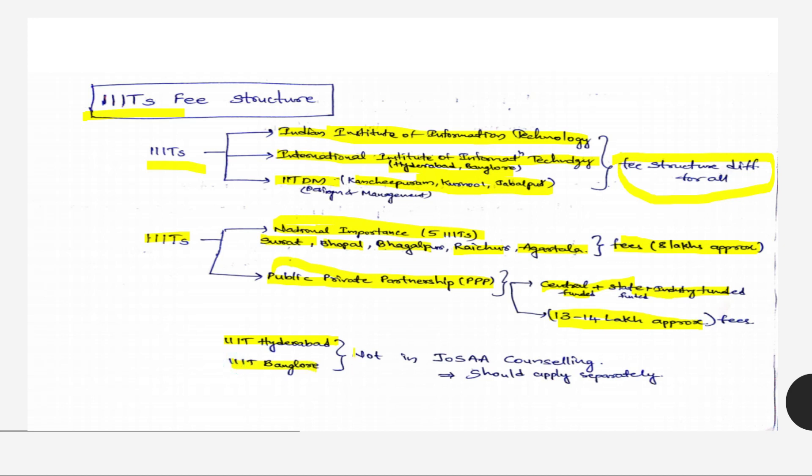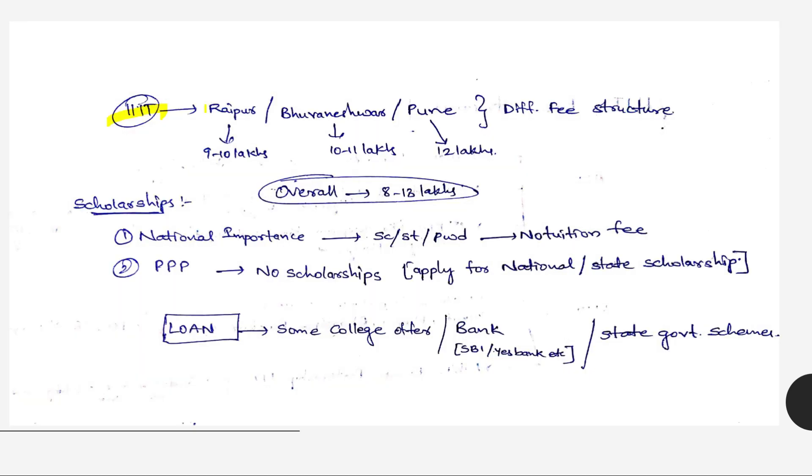IIIT Hyderabad and IIIT Bangalore are not available in JOSAA counselling and you should apply separately through their websites. These IIITs have different fee structures so I mentioned them separately. Raipur has 9 to 10 lakhs for 4 years, Bhubaneswar 10 to 11 lakhs per 4 years, and Pune 12 lakhs for 4 years. These are subject to change - I got this information from their websites according to previous year fee structure.